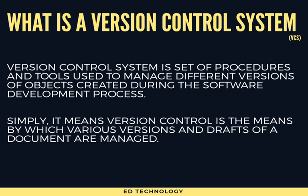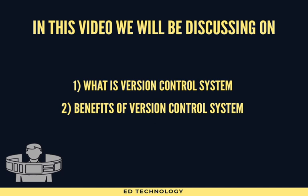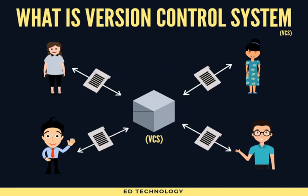Now let us understand what we'll be covering in this video: what is version control system and what are the benefits. As you can see here, there are multiple actors working on a single system, sharing multiple versions of source files, document files, or any other project items. We have four different actors working on different versions of the file, storing them in a central repository — that is the version control system.